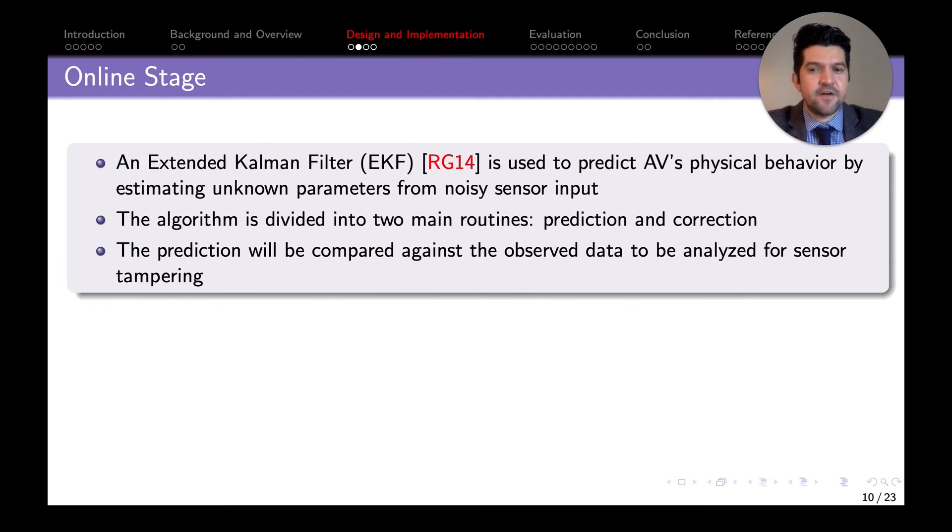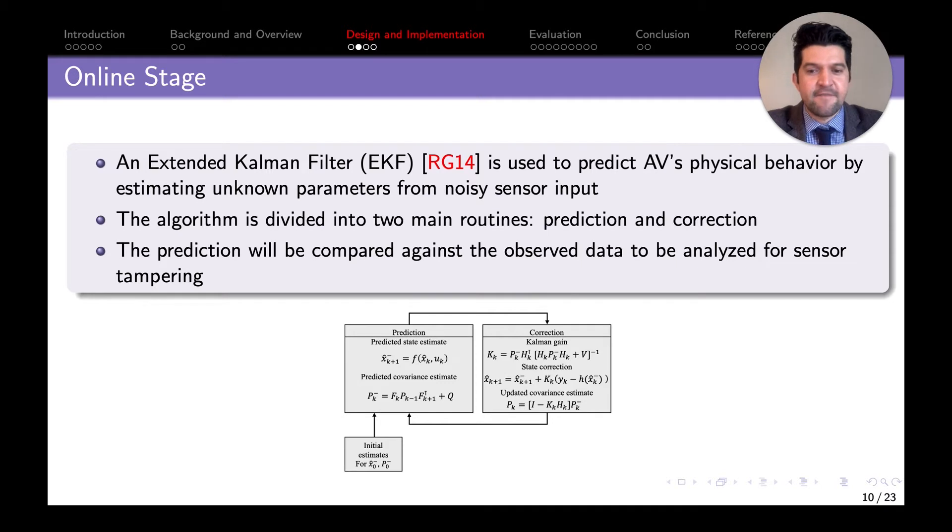For the online stage, we use an Extended Kalman Filter (EKF) to predict physical behavior and estimate unknown parameters from noisy sensor inputs. This algorithm is divided into two routines. Number one is the prediction in which we get measurements from the previous time and use that to estimate the next state of the device. Because measurements are not always 100% accurate, this has a second correction stage in which we calculate the Kalman gain used to decide how much of the measurement or prediction we're confident is correct. This prediction is compared against actual values from the device in real time.